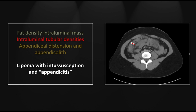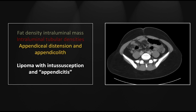Due to the intussusception, there has been obstruction of the appendix, which has become inflamed. There is a small appendicolith, there is distension, and there is wall thickening. These meet all the criteria for acute appendicitis, although upon viewing the cine, you may suspect it is mechanical.